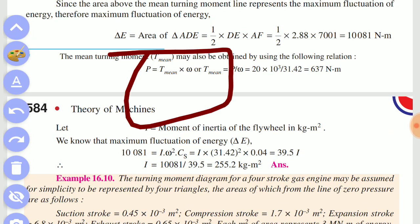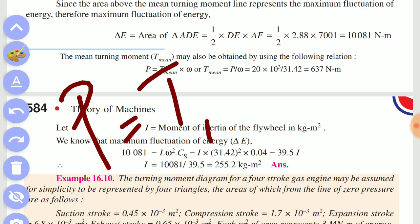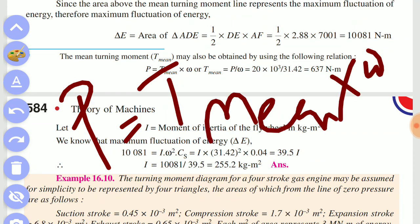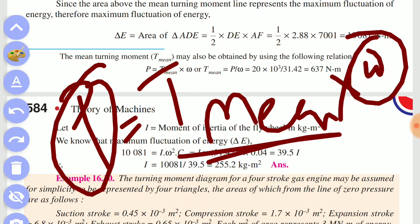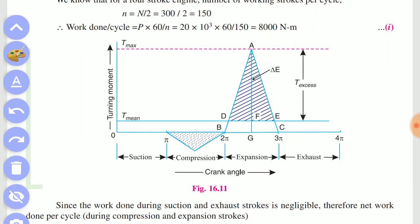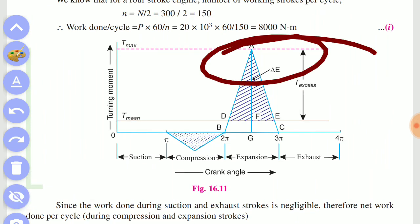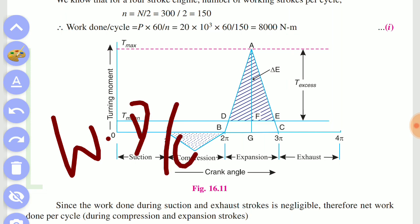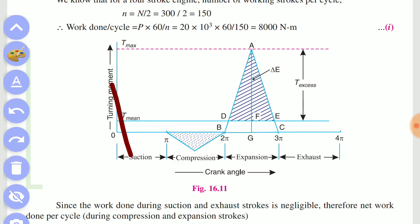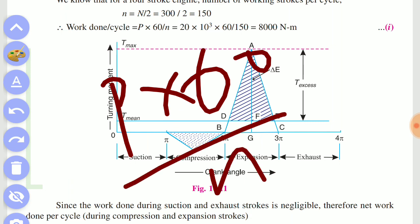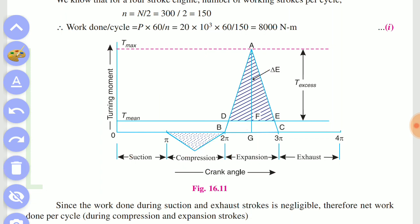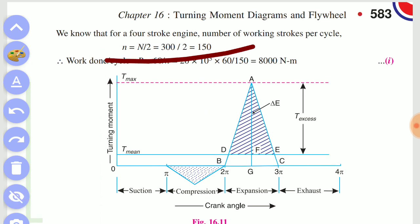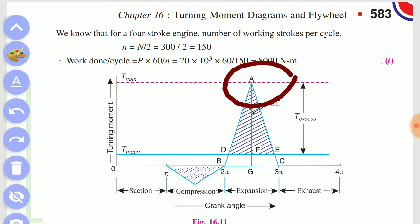Power equals T-mean into ω. So if you have the values from the question and you have the speed, then power is equal to T-mean. The T-mean value will be known. If you have work done per cycle, then: Work done per cycle = P × 60 divided by n. For a 4-stroke engine, it becomes n divided by 2. So the value comes out to 8000 Nm.